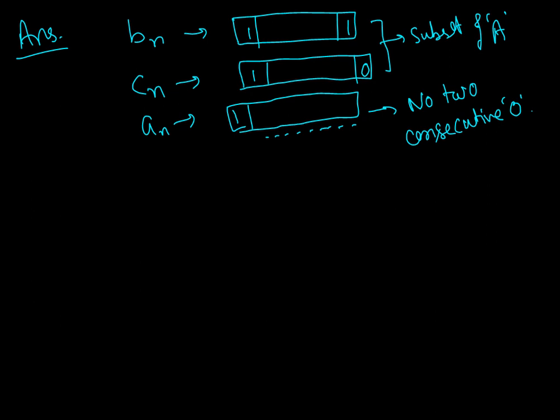And out of these numbers, whichever number ends in digit 1, the number of those numbers is b_n, and the numbers which end in digit 0, the number of those numbers is c_n.